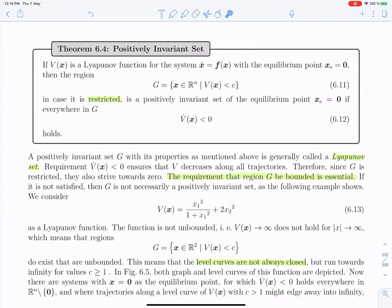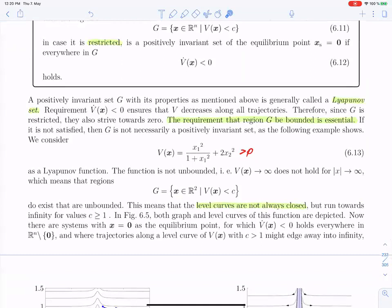Here is a warning counter-example. Consider the Lyapunov function candidate V(x) = x2^2 / (1 + x1^2) (or similar form). At first glance it looks positive, but if x2 goes to infinity then V goes to infinity; however, if x1 goes to infinity with x2 = 0, then V converges to one — it does not go to infinity. Therefore this function is not radially unbounded, and the condition of radial unboundedness does not hold. The consequences of this will be shown.